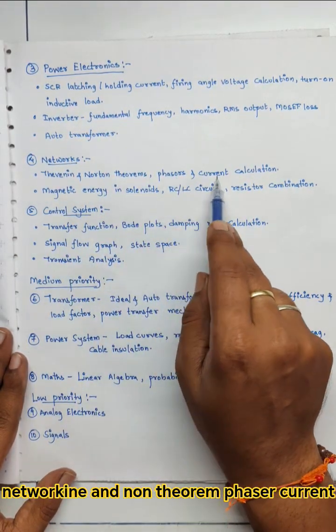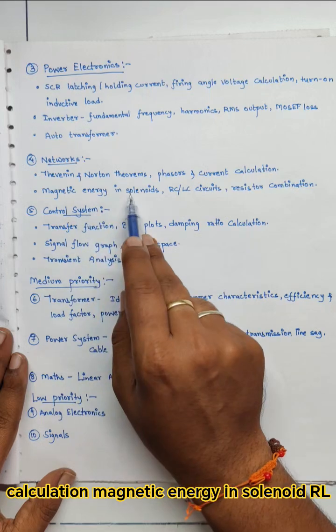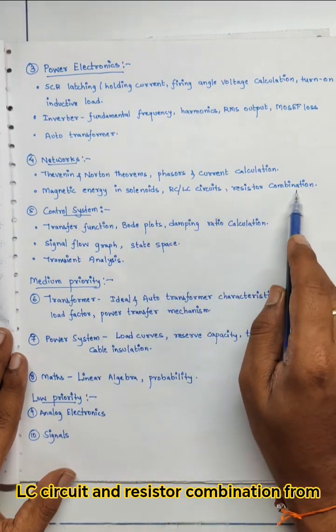From network: Thevenin and Norton theorem, phasor, current calculation, magnetic energy in solenoid, RL, LC circuit and resistor combination.